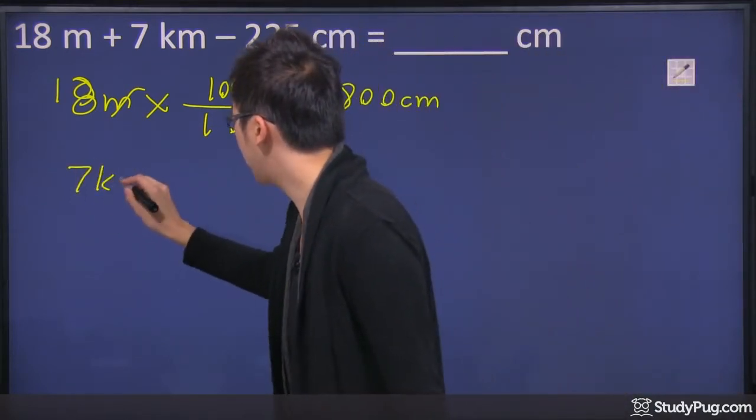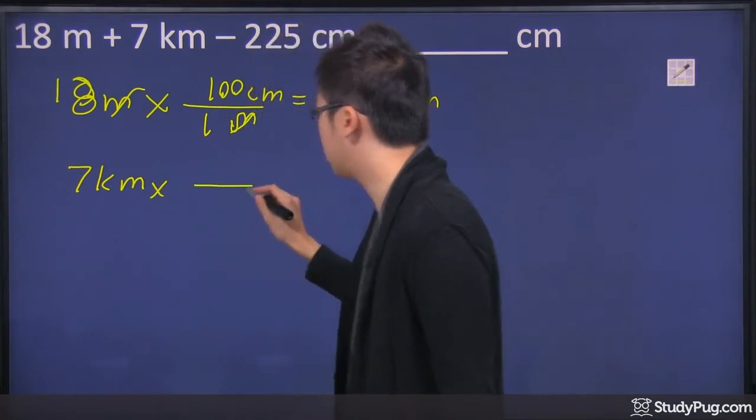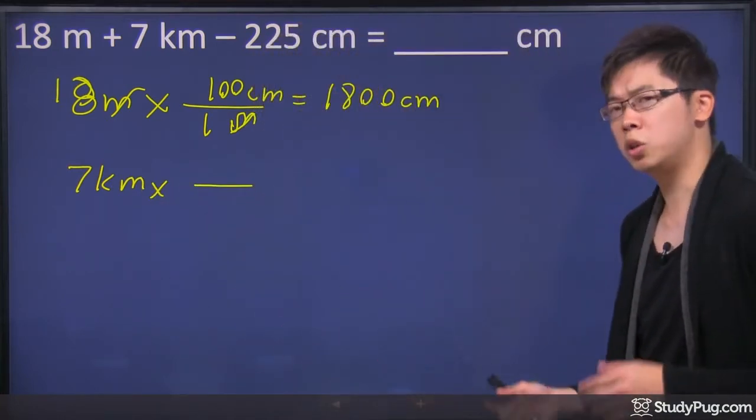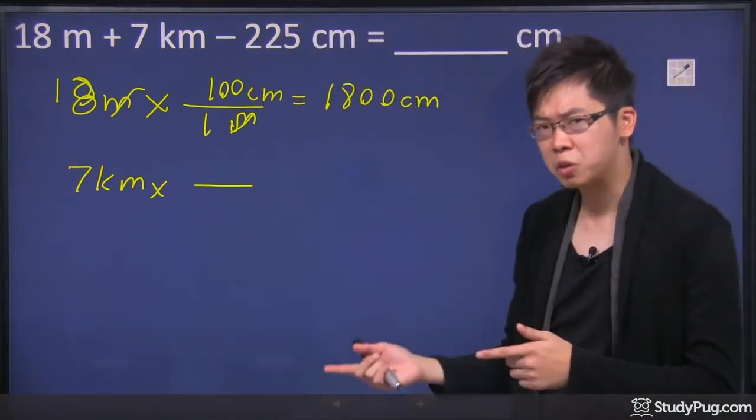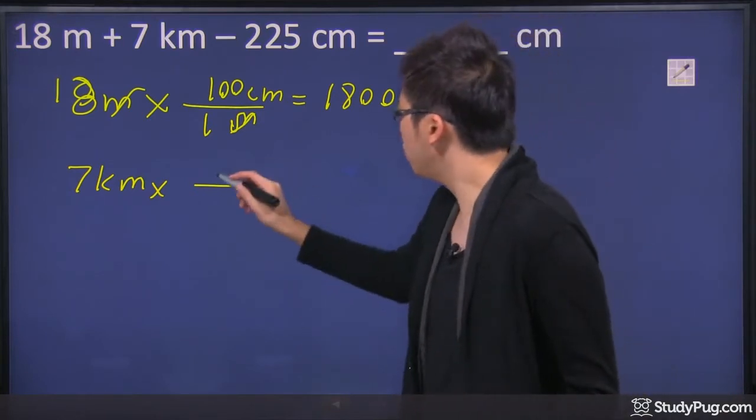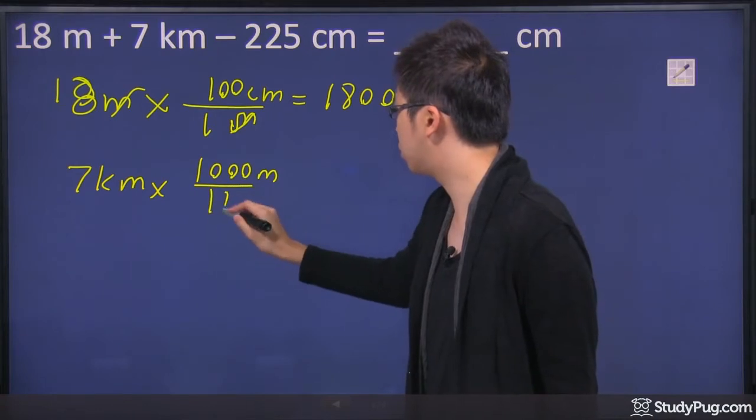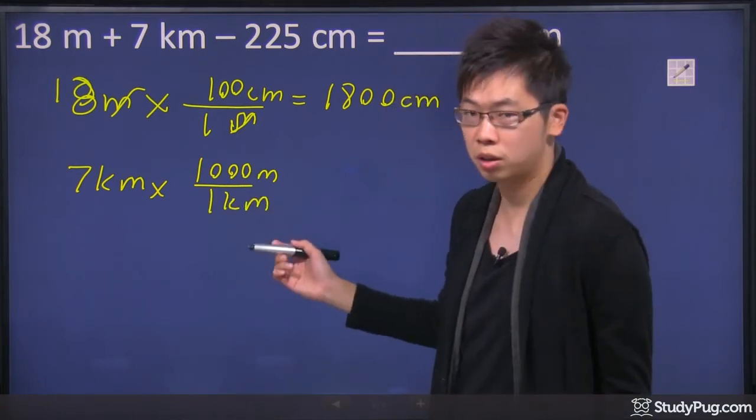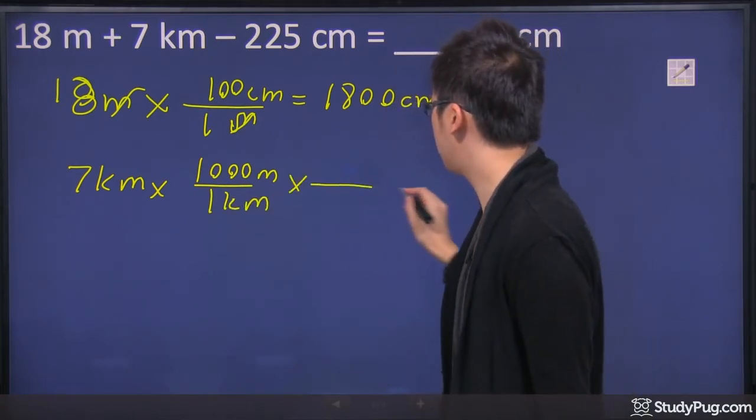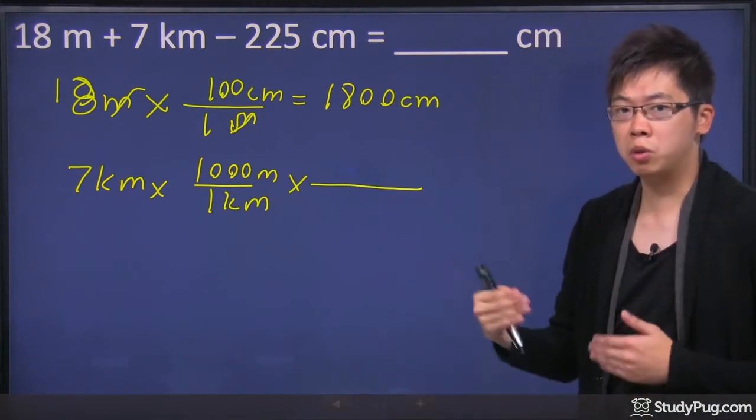So this one might take a little while, but it's no worry because we're just going to do one conversion at a time. So let's go from kilometers to meters first because that's easier. Because we remember that for every 1,000 meters, it's equivalent to 1 kilometer. Then you can actually do it one more time.